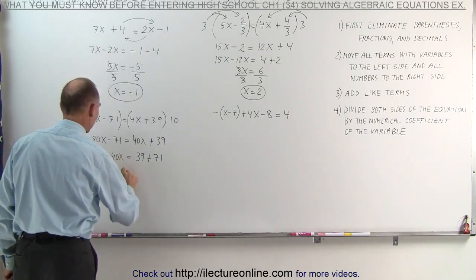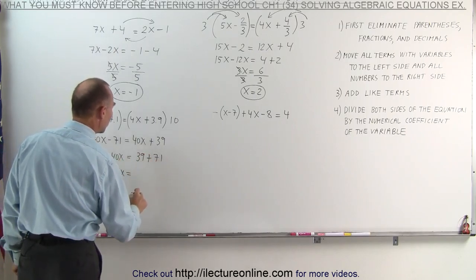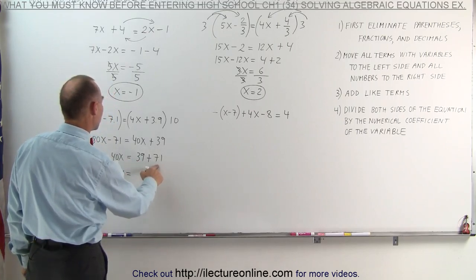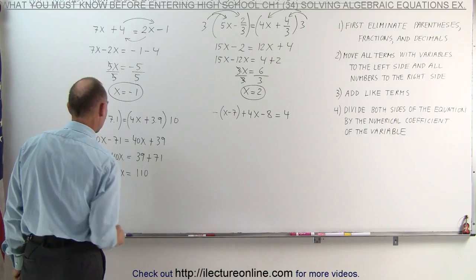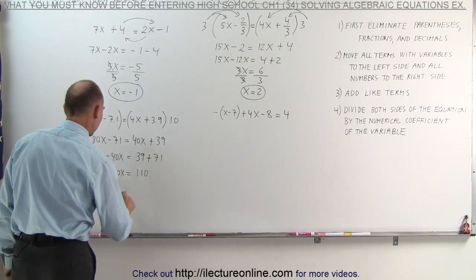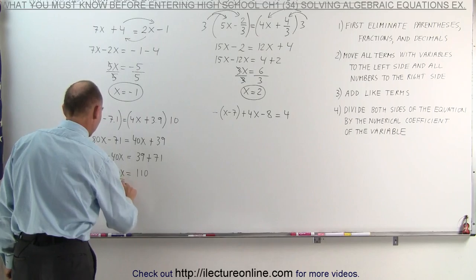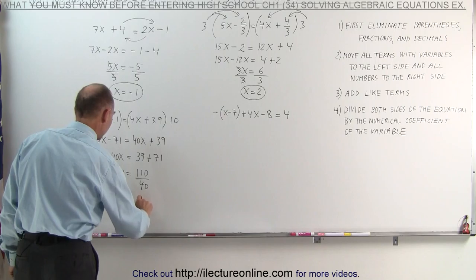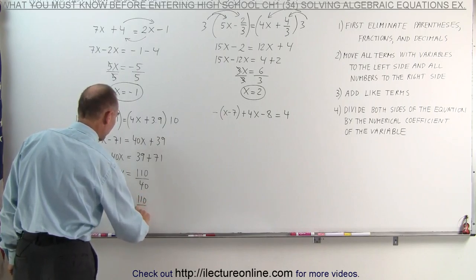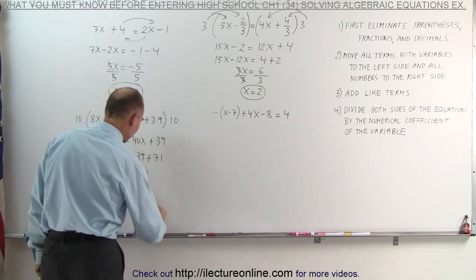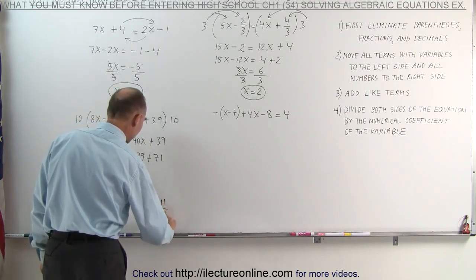And 39 plus 71 is... Let's see here. That would be 110. Then I divide both sides of the equation by the numerical coefficient. Divide both sides by 40. We get x is equal to 110 over 40. Now we can simplify that by dividing both top and bottom by 10. So this becomes 11 divided by 4.